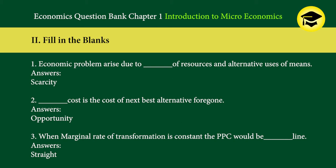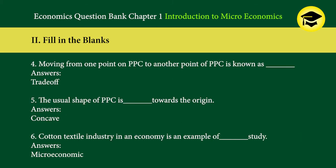1. Economic problems arise due to blank of resources and alternative uses of means — answer: scarcity. 2. Blank cost is the cost of the next best alternative forgone — answer: opportunity. 3. When the marginal rate of transformation is constant, the PPC would be a blank line — answer: straight.